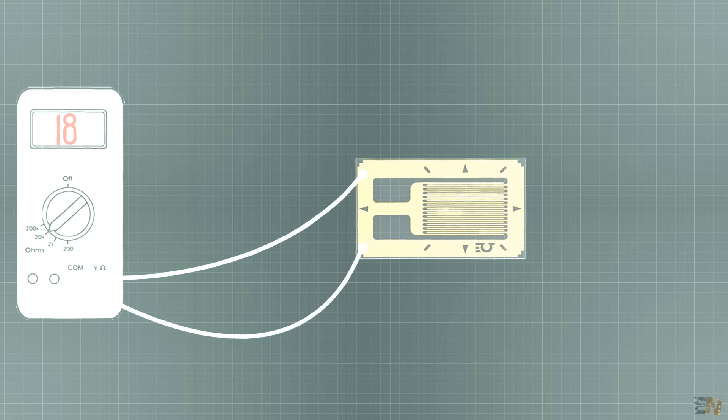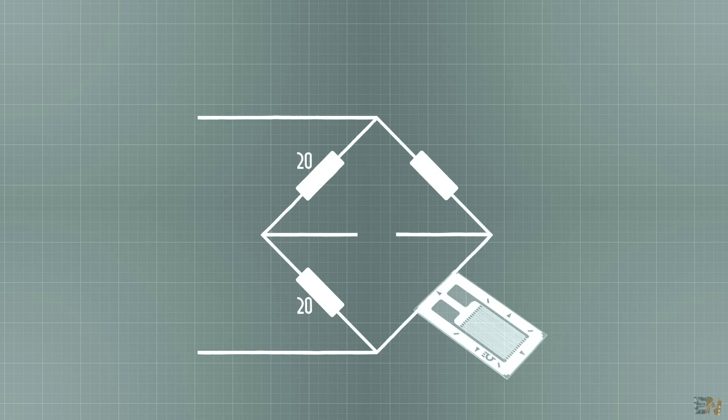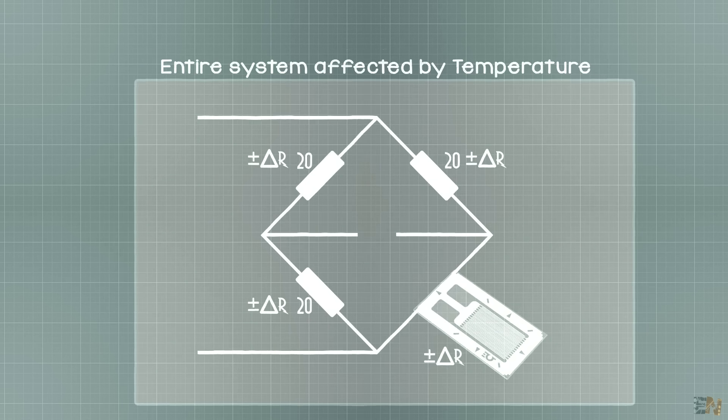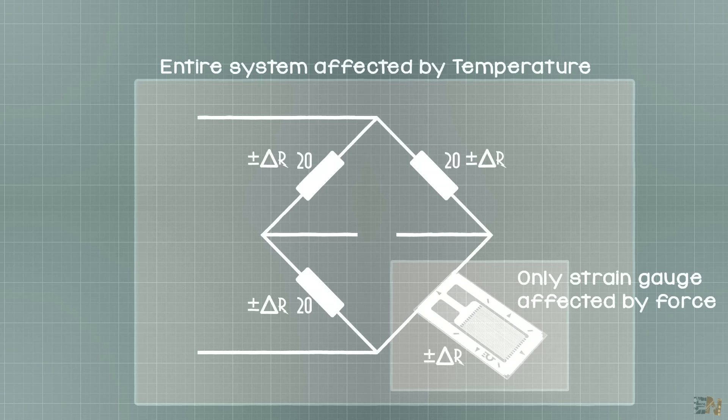But if we put this in a Wheatstone bridge together with other resistors that will also change by the temperature, the output won't be affected because the entire system is affected by the temperature but only the gauge is affected by the force, so we separated the temperature error from the gauge sensor.